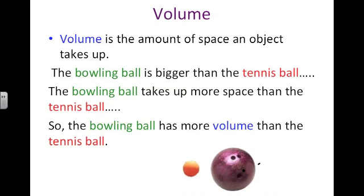Finding volume. Volume is the amount of space an object takes up. In this picture here you see that we have a bowling ball and a tennis ball. The bowling ball is bigger than the tennis ball and takes up more space, so the bowling ball has more volume than the tennis ball has.